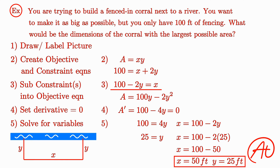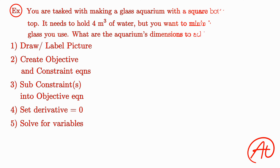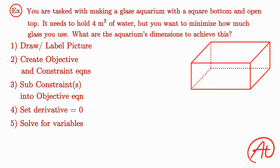To make sure we understand this process, let's do one more example. Let's return to the example from earlier, where we want to design an aquarium that can hold 4 cubic meters of water while minimizing the amount of glass used. So first, let's draw and label our picture. From the question, we know that the base is square, so we can label both of those sides x. Then we don't know anything about the height, so let's label that some other unknown y. Next, we have to figure out what our objective and constraint equations are. Since our objective is to minimize the amount of material used, that becomes our objective equation. The amount of material used is synonymous with surface area, so let's calculate the surface area.